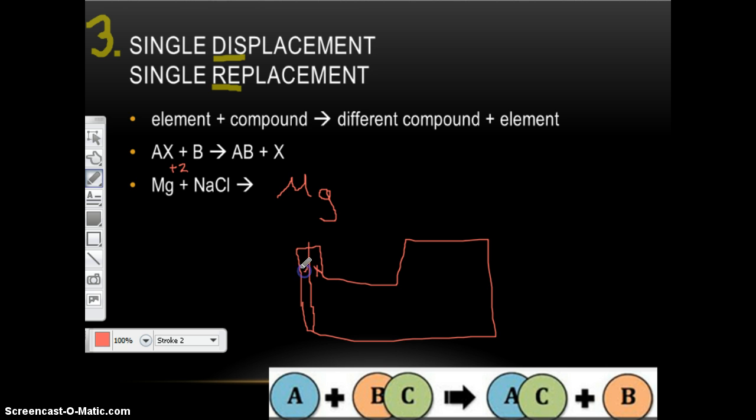Sodium, Na, it's right here, group one. So what's the charge? Plus one. Chlorine is way over here. It is a halogen. It's in group seven A, and so it's going to gain one electron for a negative one charge. So which one is magnesium going to bond with? It has to bond with Cl. Why? Because you have to have a positive and a negative together. And then by itself will be sodium.